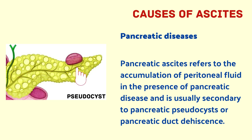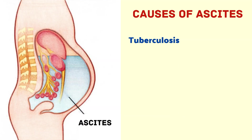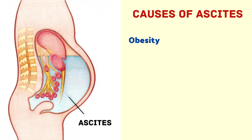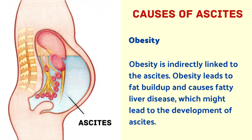The next cause is pancreatic disease. Pancreatic ascites refers to the accumulation of peritoneal fluid in the presence of pancreatic disease, and is usually secondary to pancreatic pseudocyst or pancreatic duct dehiscence. The next cause is tuberculosis. Tuberculosis causes inflammation of the peritoneum and fluid leakage out of the capillaries, and also increases portal pressure.